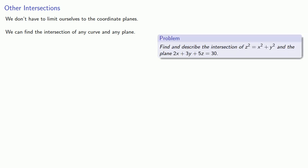Now we don't have to limit ourselves to the coordinate planes. We can find the intersection of any curve and any plane. For example, we want to find and describe the intersection of z squared equals x squared plus y squared and the plane 2x plus 3y plus 5z equals 30. That's a system of two equations and three unknowns, and we have a nonlinear system, which is going to be challenging. So let's focus on planes of the form x equals a or y equals b or z equals c.